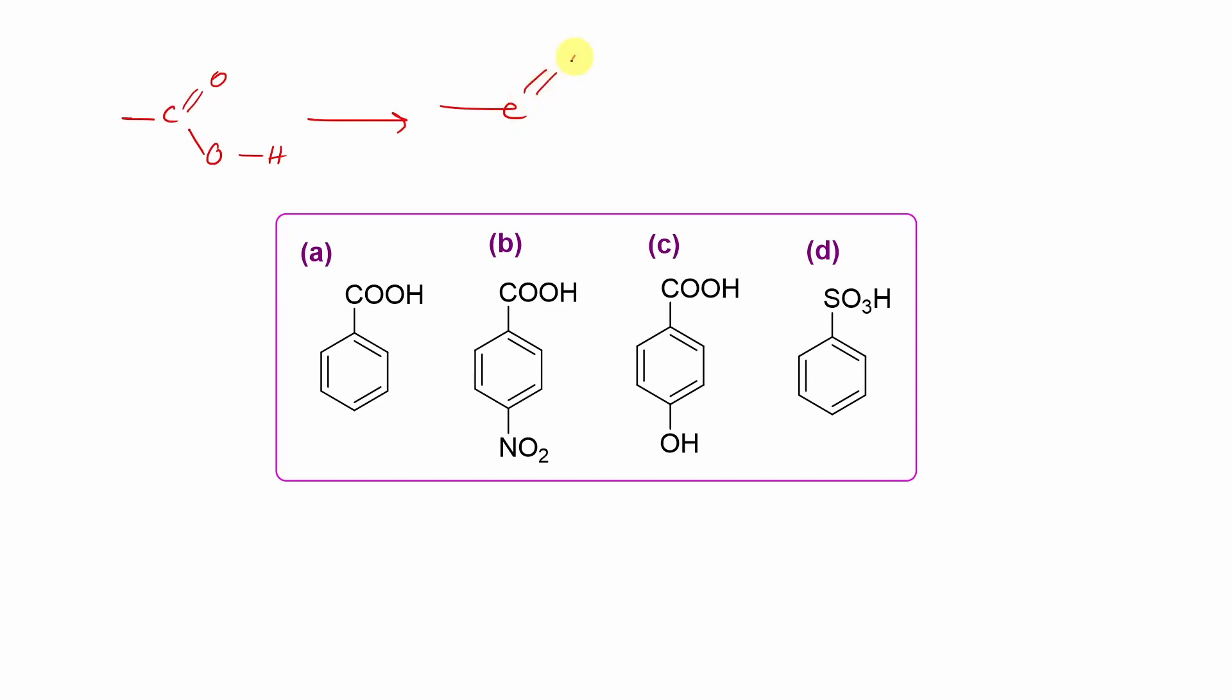Carboxylic acid releases one proton and produces carboxylate anion. This carboxylate anion has a resonance stability. This comes here, it comes here.